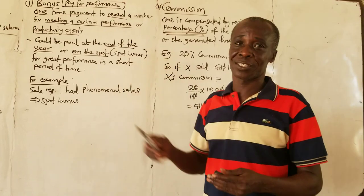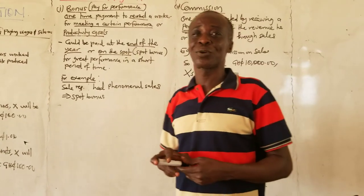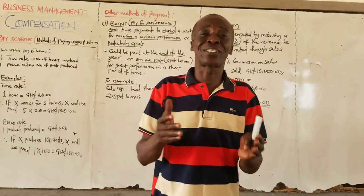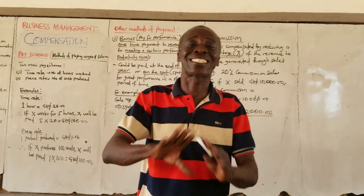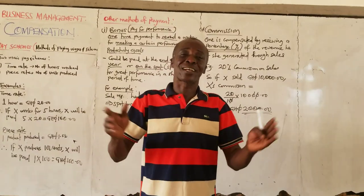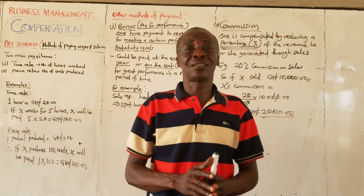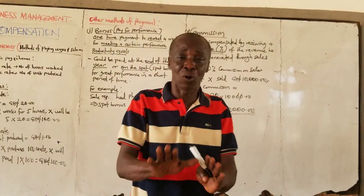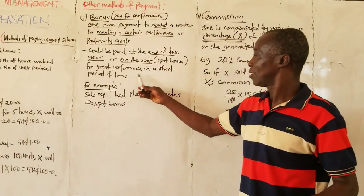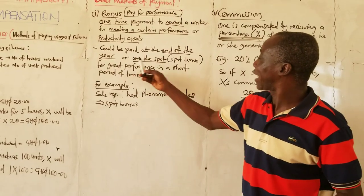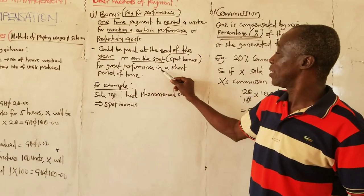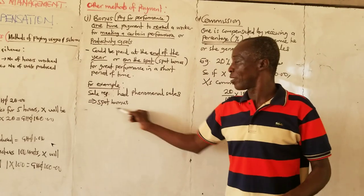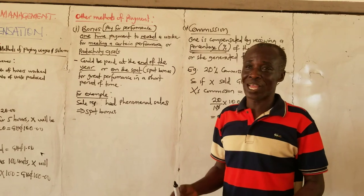A spot bonus is given for great performance in a short period. For example, a sales representative had phenomenal sales on a particular day - that day was so unique, he sold so much - and the organization decided that today we are giving you this. That is the spot bonus: given immediately for outstanding performance in a short period.